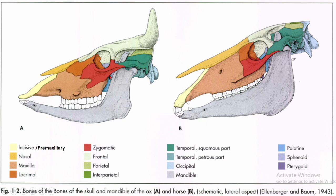This is a picture of the skull of a cattle and horse. Each bone is represented by a particular color. The names of each bone denote the part and location of the skull. First of all, the incisive or premaxillary bone is shown in yellow, found above the incisor teeth — that is why it is called the incisive bone. This one is the nasal bone, which forms the nasal passage or nasal cavity. This one is the maxilla, which is the upper jaw of the skull. This one is the lacrimal bone, found at the site of the lacrimal duct, which secretes tears or lacrimation.